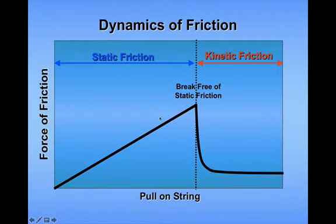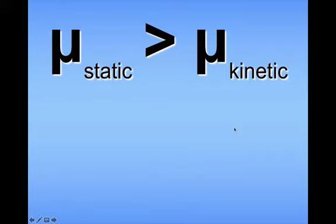Friction can be static or kinetic. Static friction is when the object is not moving and the friction is just holding it in place. Kinetic friction is when the object is sliding. The coefficient of static friction between two materials is always larger than the coefficient of kinetic friction.